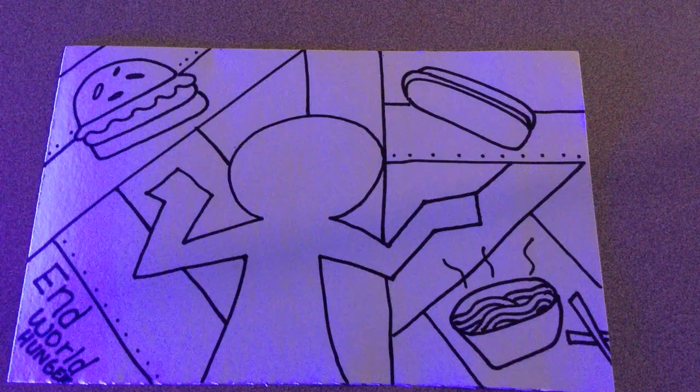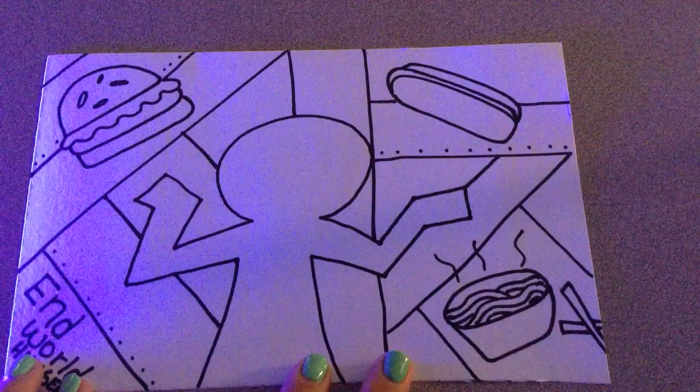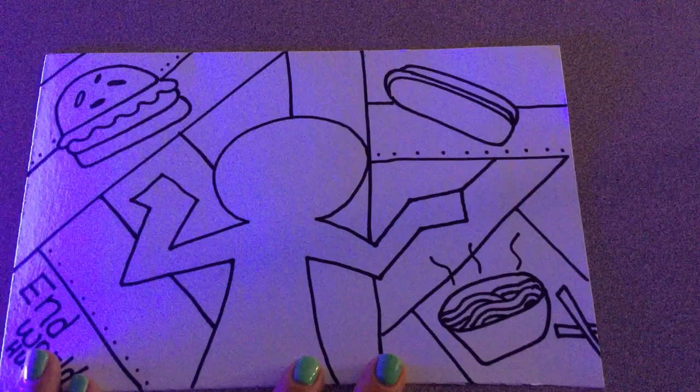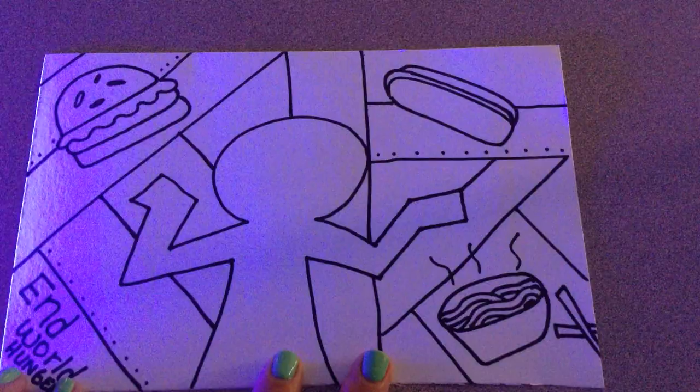So once you have finished creating your drawing and outlining in Sharpie, it's going to be time for us to paint. And we are actually going to be working with neon paints in the classroom, but at home you can use any colors that you would like.